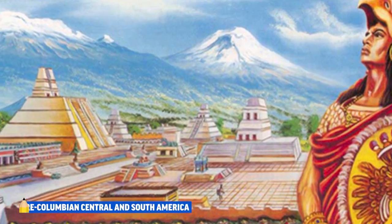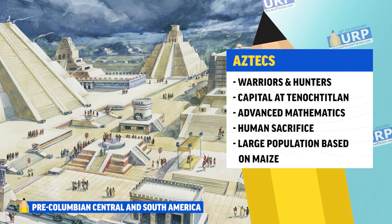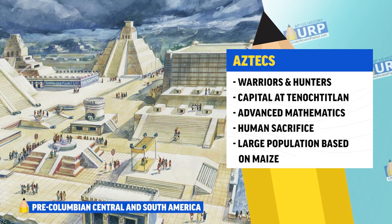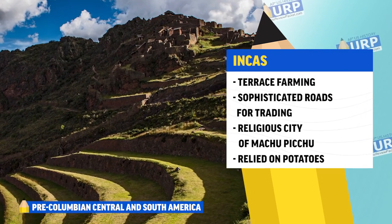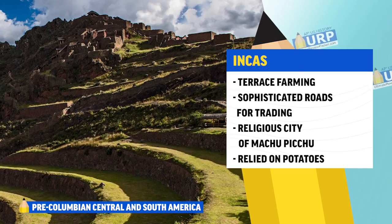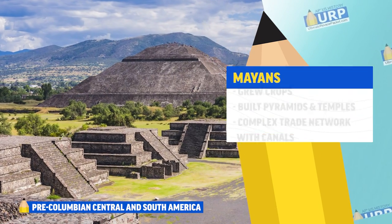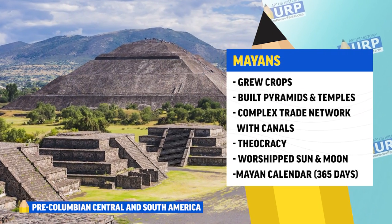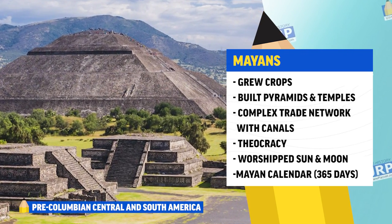There are three groups from Central and South America to know. First, the Aztecs began as warriors and hunters, but built their capital at Tenochtitlan, which grew to around 200,000 people. They were known for advanced mathematics and human sacrifices, and their society grew large due to a stable food source in maize. Second, the Incas developed terrace farming and a sophisticated road network for trade, built cities like Machu Picchu for religious purposes, and relied on potatoes as a stable food source. Finally, the Mayans raised crops, built pyramids and temples, and had complex trade networks including canals. Their government was a theocracy ruled by priests; they worshipped the sun and moon and developed a 365-day calendar.